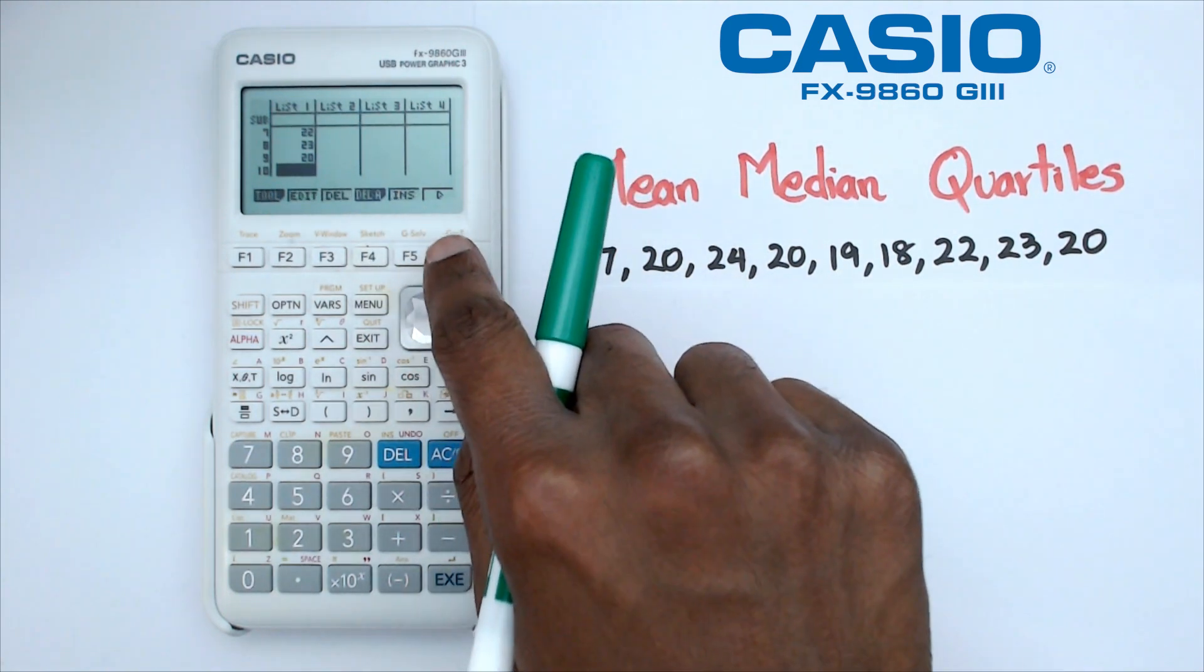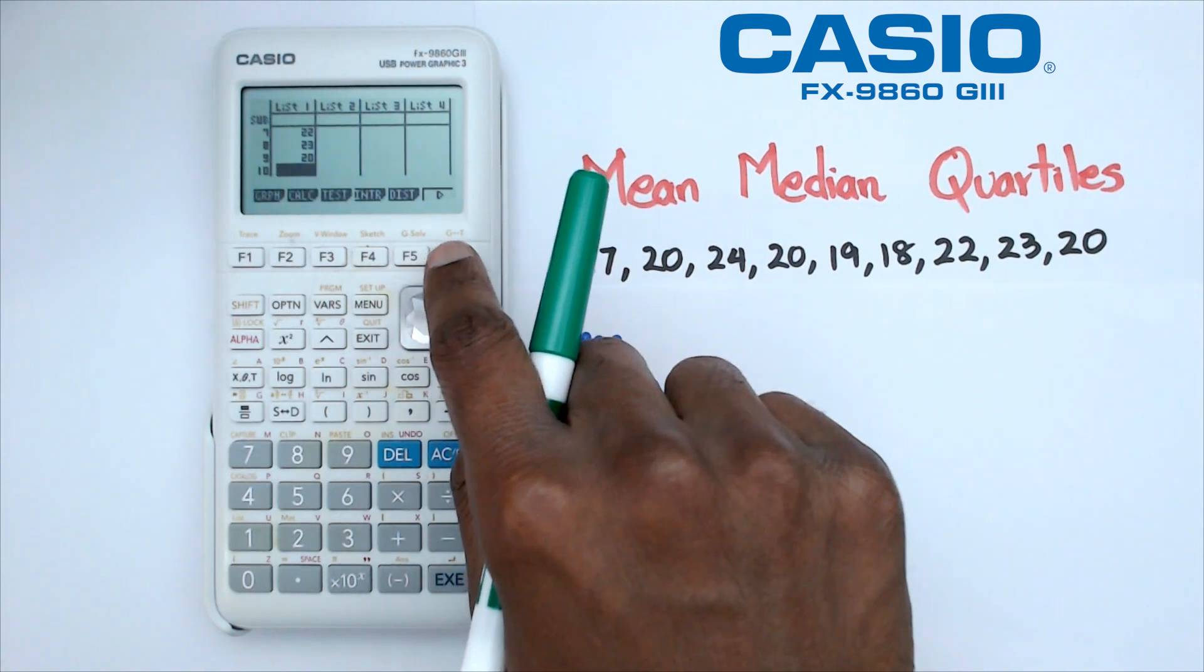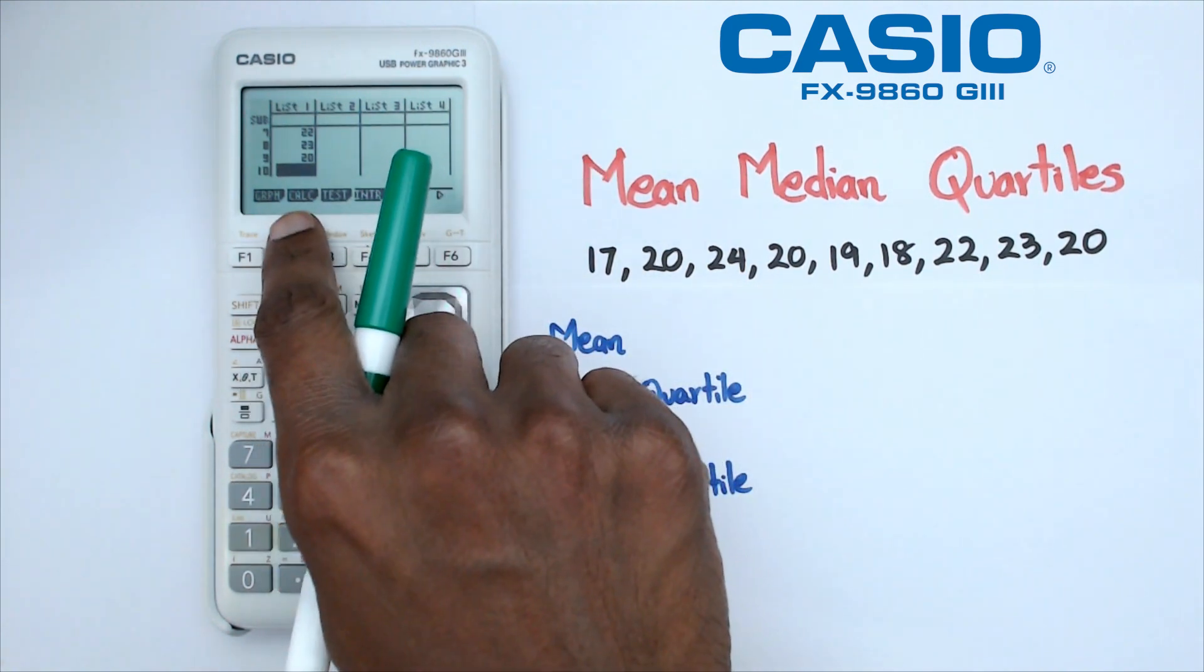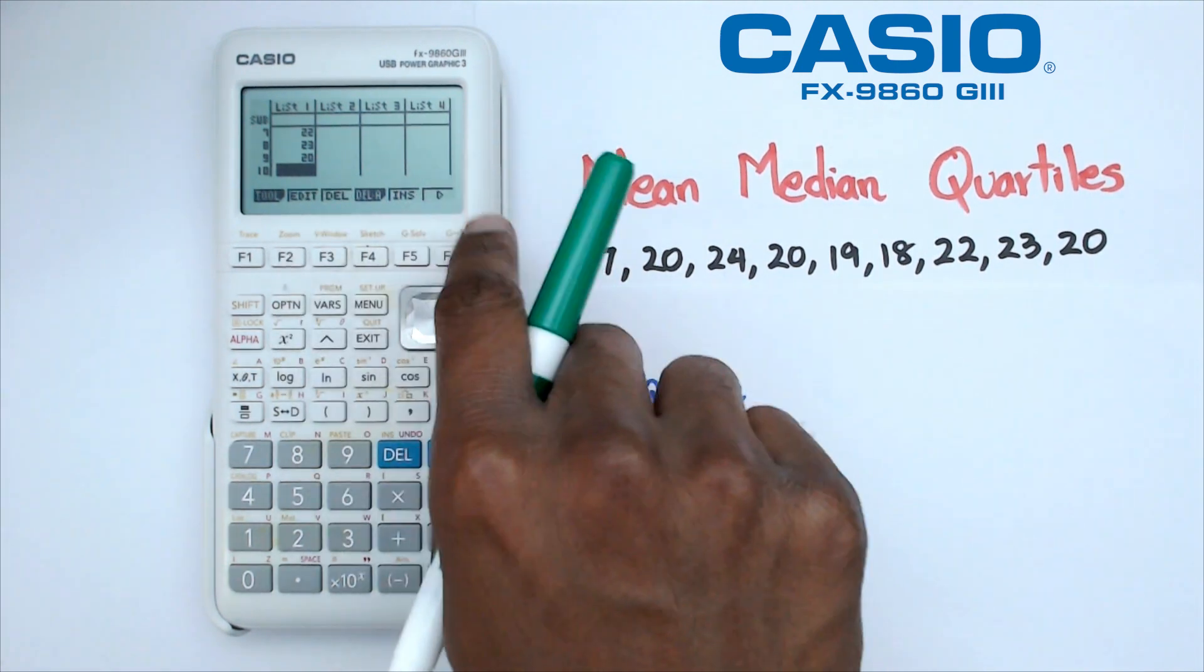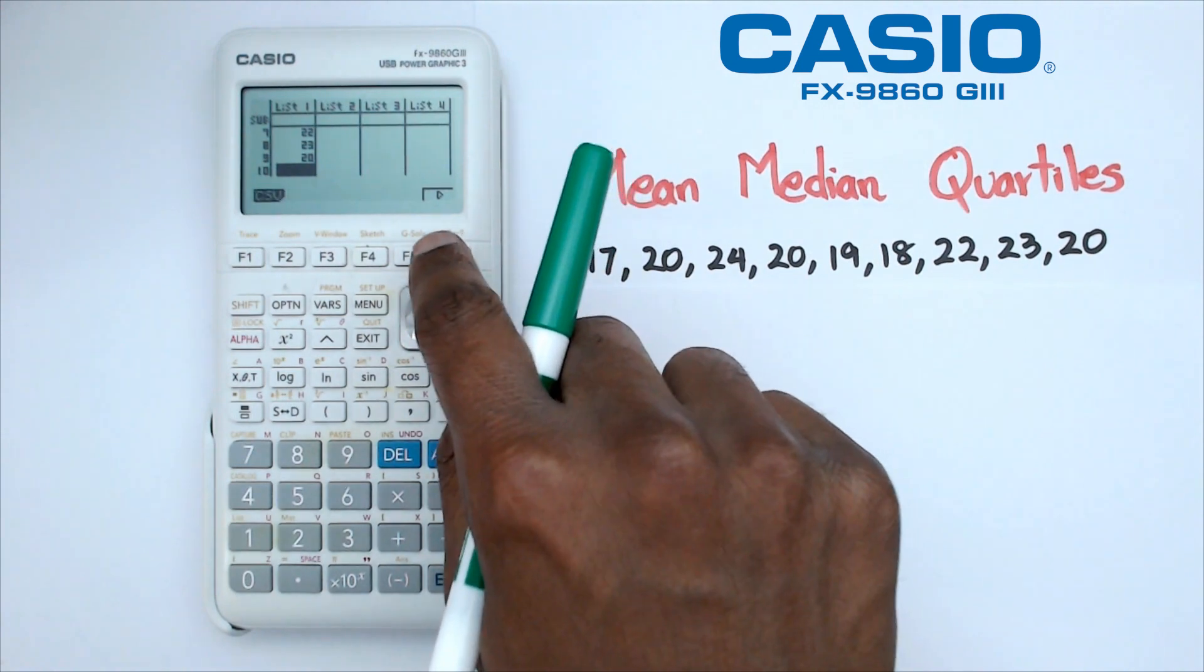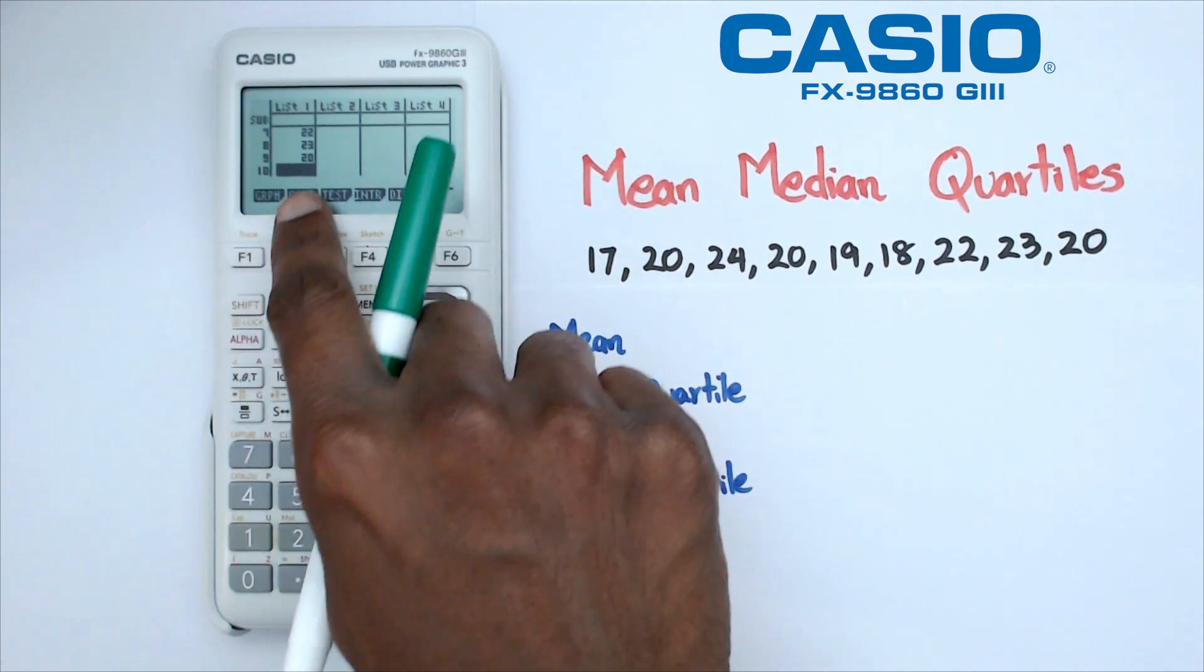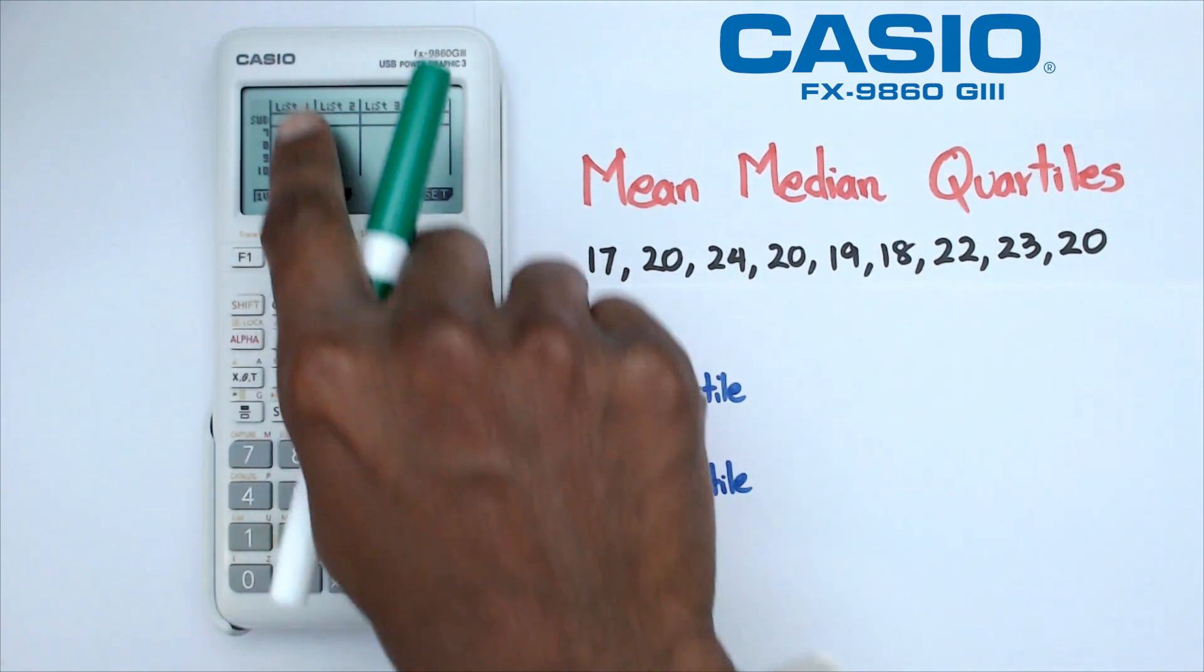So we're going to navigate through these three menus here and we want to stop when we get the calc part. When you have to delete, you have to go to the next page and you delete all these values on the list, and then we're going to cycle through and come back to the main part which will have calc. So we're going to click on calc, which is F2.